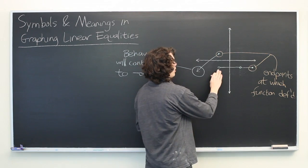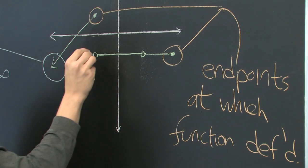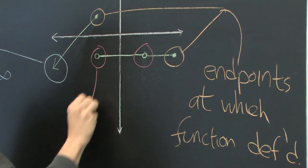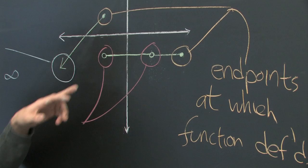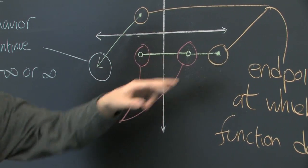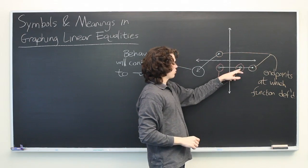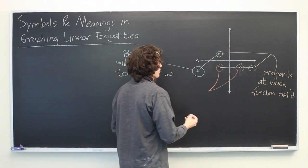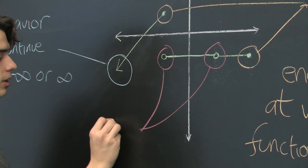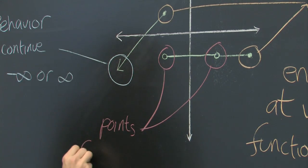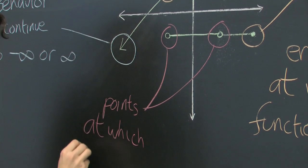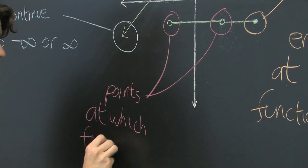Well, what about these open circles? These are a little different. We see that one of them is an endpoint, like these closed guys. But this one is right in the middle of the line. So what does this mean? Quite simply, they are points on our graph at which the function is not defined.